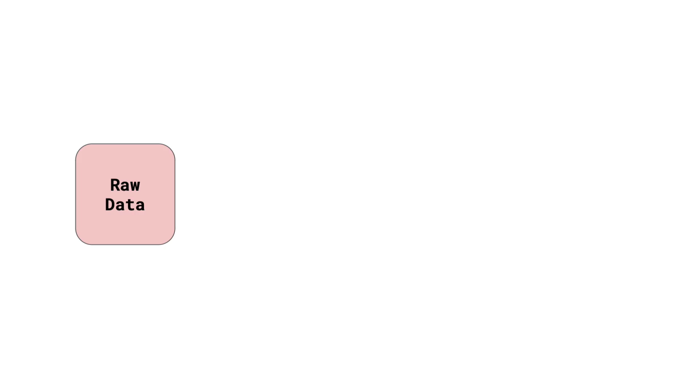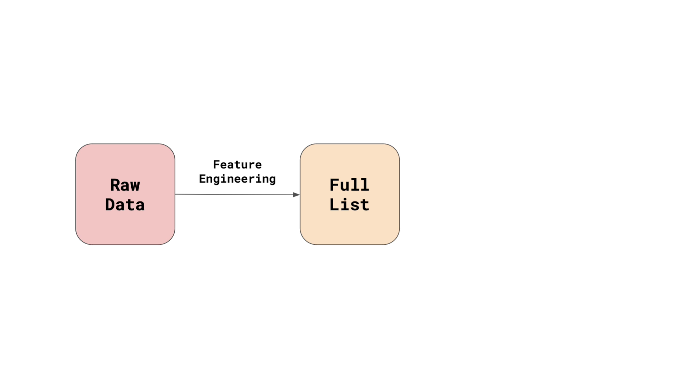To start, let's clarify what we mean by feature selection. In the model development process, feature selection happens after feature engineering and before we start fitting models. During feature engineering, we transform our raw data into a list of model features. Depending on your problem, this list may be large — that is, over 1,000 features.